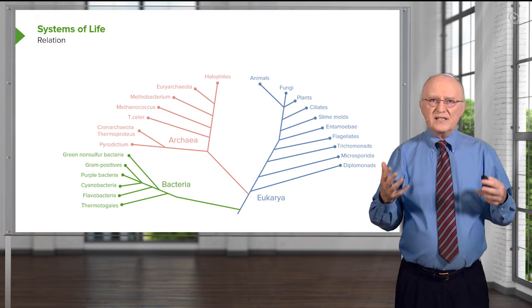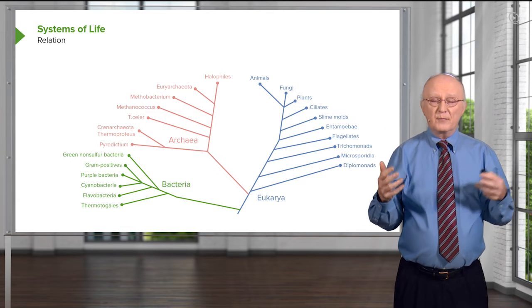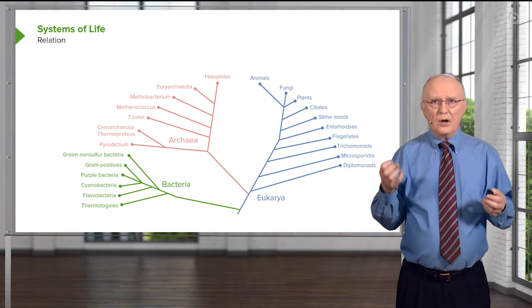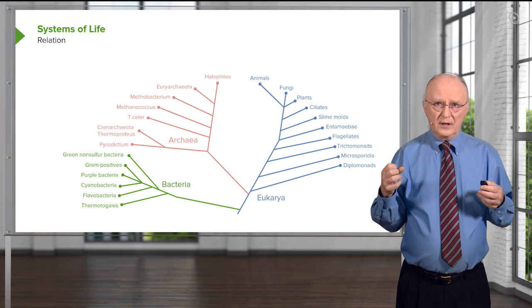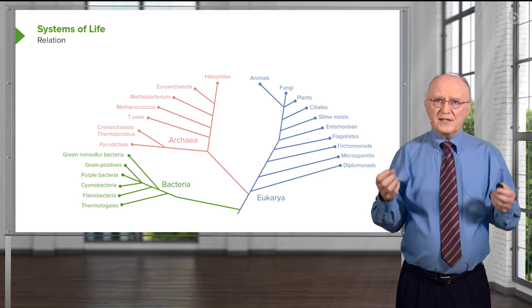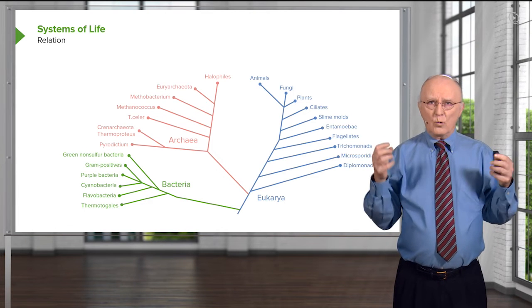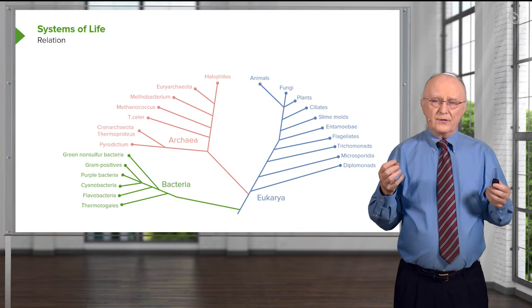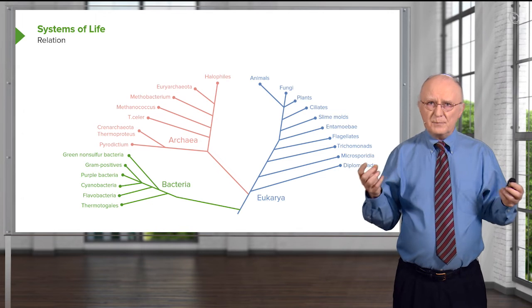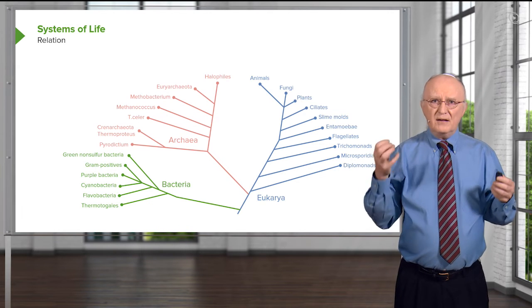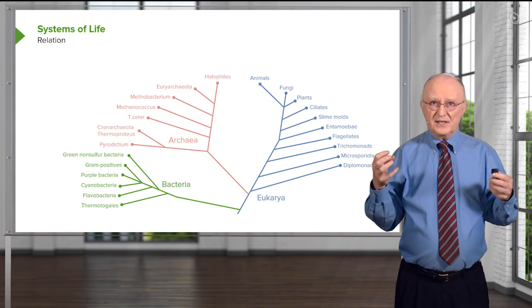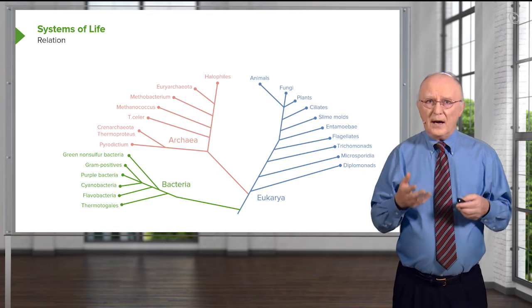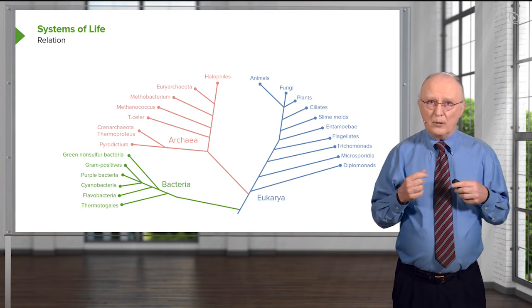The eukaryotic cells differ from the prokaryotic cells and the Archaean cells in first of all generally being considerably larger, and second of all in containing specialized organelles like the nucleus and the mitochondrion. These specialized organelles play distinct functions in these cells that are distributed otherwise throughout the entire bacterial or Archaean cell.